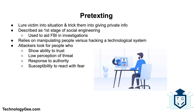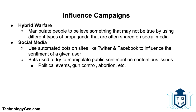Next is pretexting. This is a type of social engineering attack that involves a situation or pretext created by an attacker in order to lure a victim into a vulnerable situation and trick them into giving private information — specifically information the victim would typically not give outside the context of the pretext. Pretexting has been described as the first stage of social engineering and has been used by the FBI to aid in investigations. Its prevalence relies on manipulating people to gain access to information rather than having to hack into a technological system. When looking for victims, attackers watch for characteristics such as ability to trust, low perception of threat, response to authority, and susceptibility to react with fear or excitement.